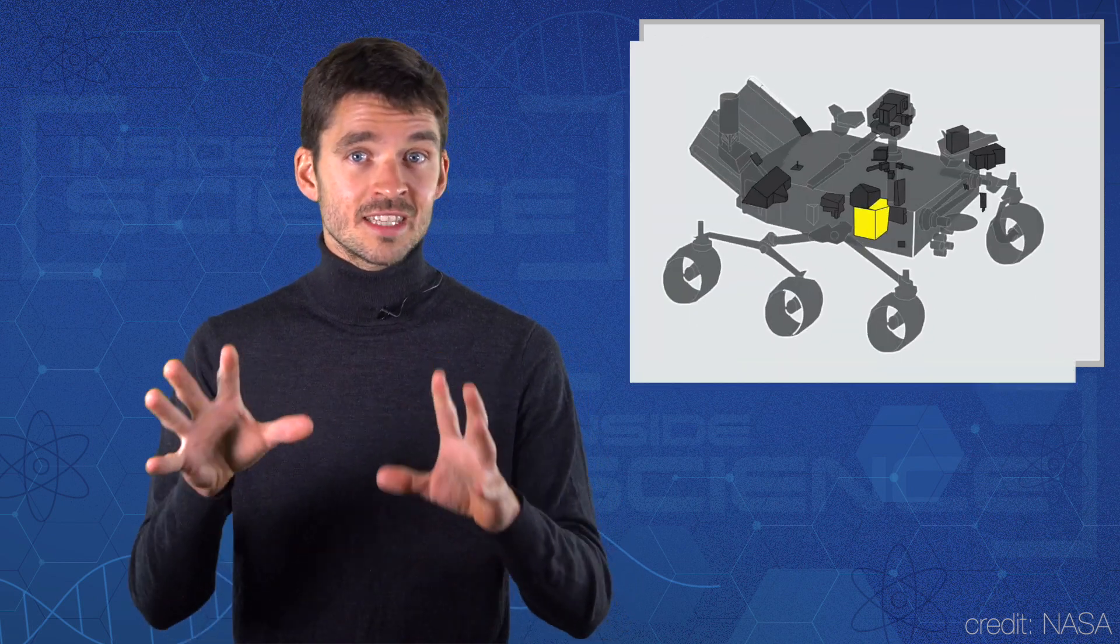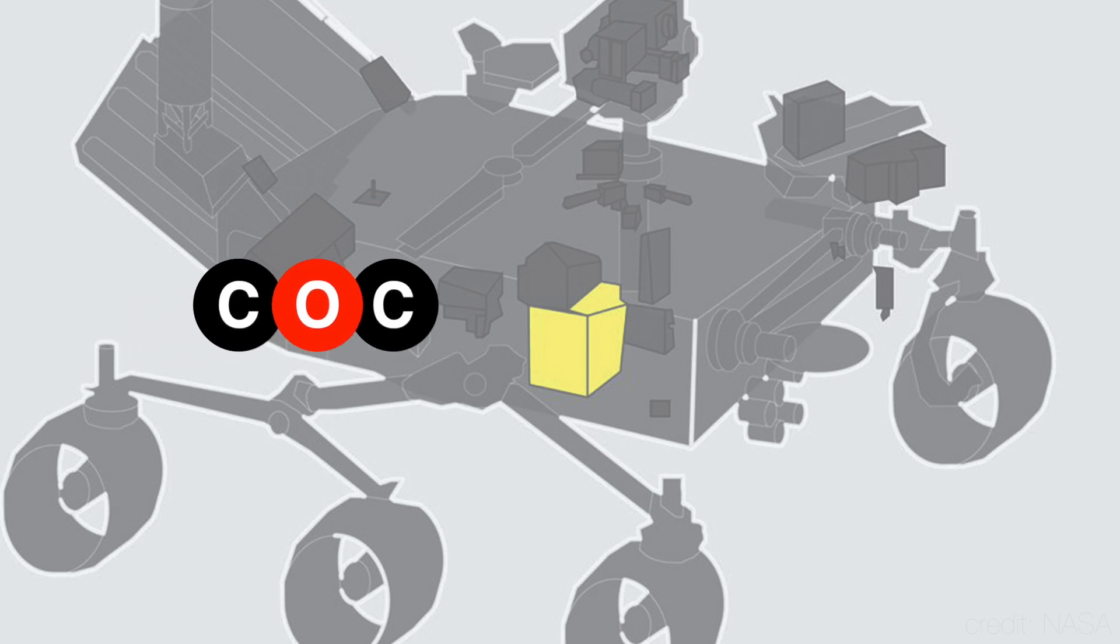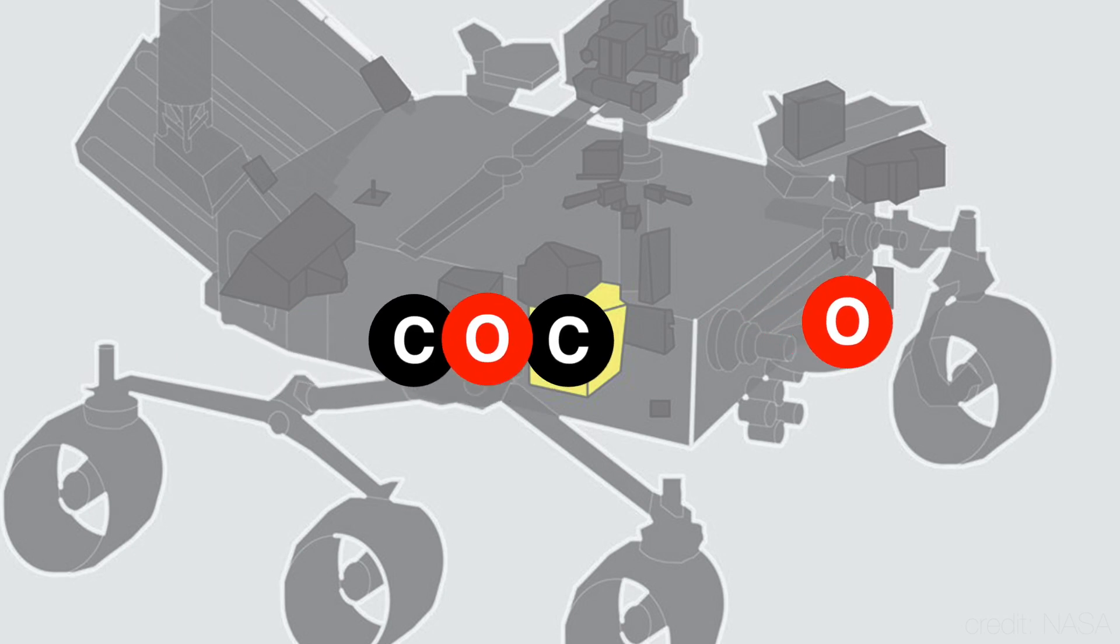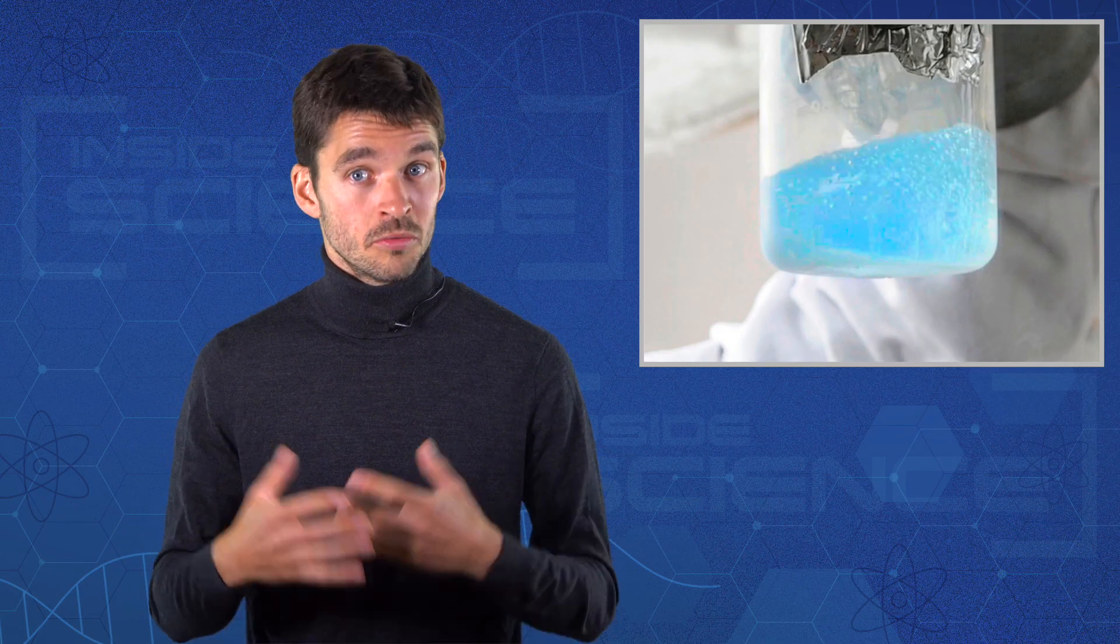This is the Mars Oxygen In-Situ Resource Utilization experiment. A unit that sucks in the plentiful carbon dioxide in the Martian atmosphere, splits off the oxygen through solid-state electronics at 800 degrees Celsius, then stores the oxygen as a liquid. And this newly formed oxygen could be used for breathing, or possibly for fuel.